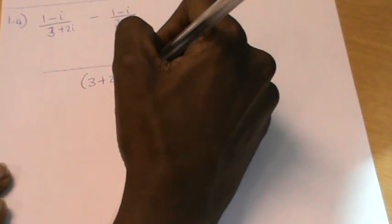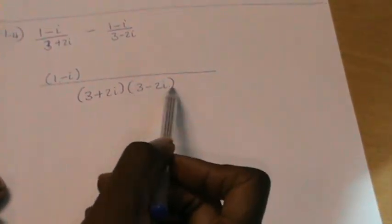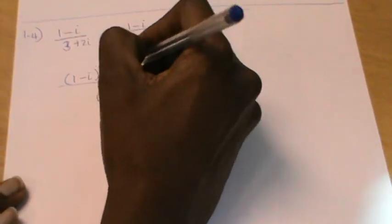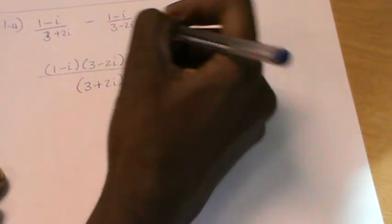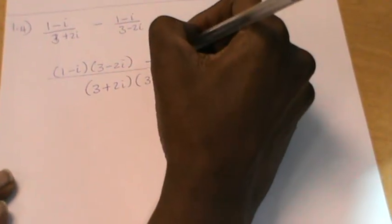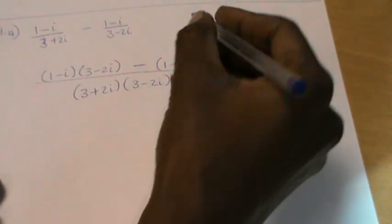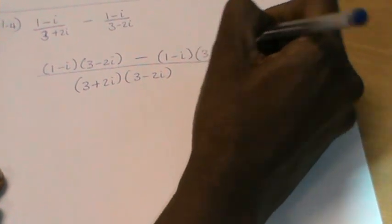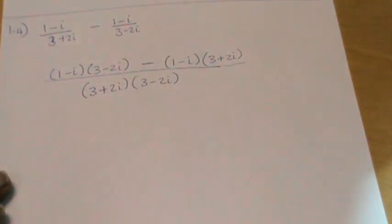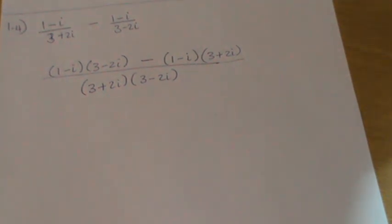The first denominator is 3 plus 2i, and the second one is 3 minus 2i. This first fraction already has 3 plus 2i, so the only thing missing is 3 minus 2i. Then minus this — I put it in brackets — so it's 1 minus i, and what's missing for that one is 3 plus 2i. I'm combining fractions and just need to make sure the denominators are the same.